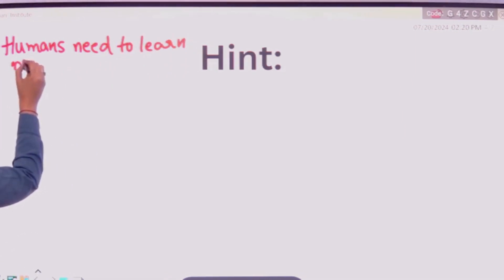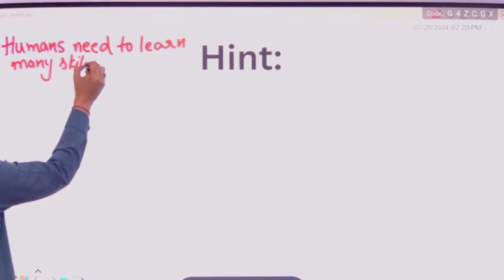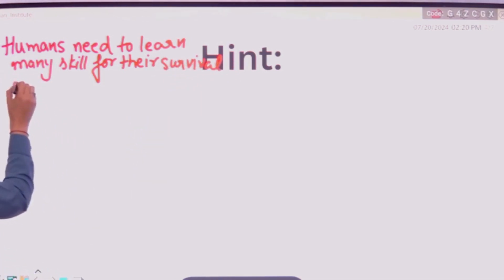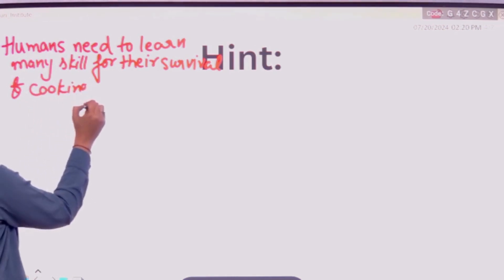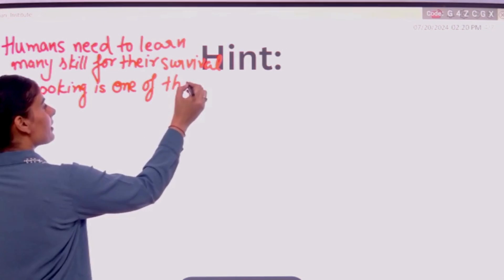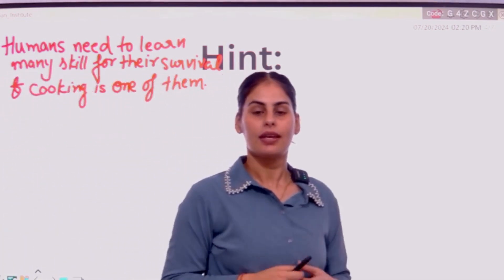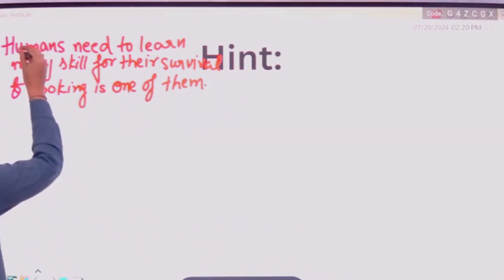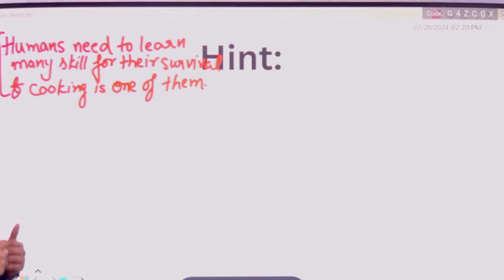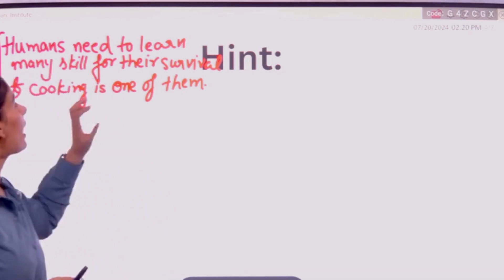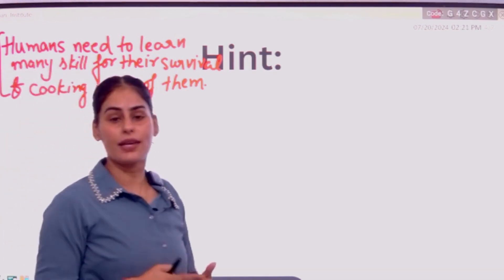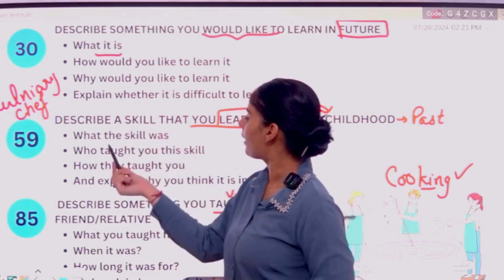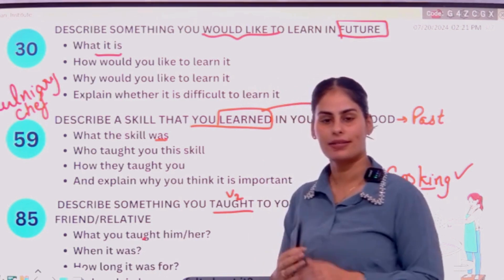Humans need to learn many skills for their survival, and cooking is one of them. So to begin your answer you can say: humans need to learn a lot of skills for their survival. You can use this as a journal opening line. First cover what the skill was — cooking — and what you taught — also cooking.